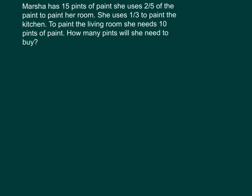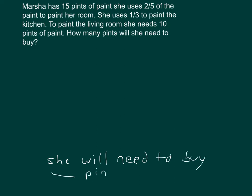Here is another problem. Marsha has fifteen pints of paint. She uses two-fifths of the paint to paint her room and one-third to paint the kitchen. To paint the living room, she needs ten pints of paint. How many pints will she need to buy? Let's write out the focused answer: she will need to buy blank pints of paint to paint her living room. We know she needs ten.